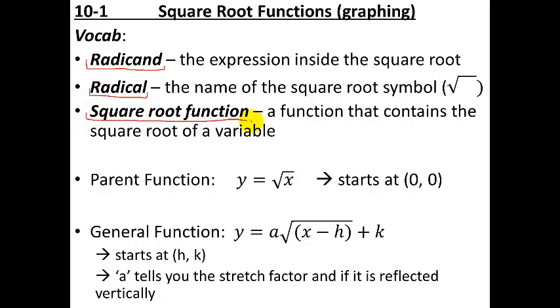And then lastly, a square root function is any function, f of x equals, that contains the square root of a variable. So you've got a radical, and inside of it there should be a variable. If you have a square root of just a number, that's just another number, so it's not a square root function. But if you have a variable under the radical sign, you have a square root function.